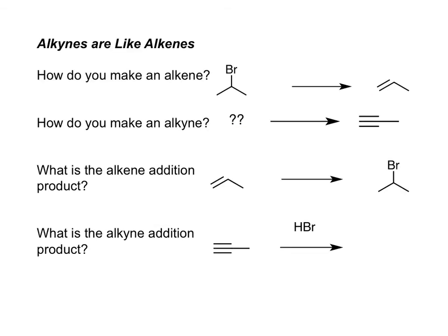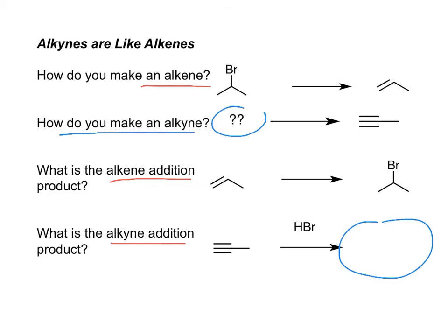Let's review some reactions. We know how to make an alkene, how to do an alkene addition reaction, and how to do an alkyne addition reaction. Four different bromine compounds can be used in an elimination reaction to make propyne — remember, use a strong base in that reaction. Also remember that addition reactions are the reverse of elimination reactions.